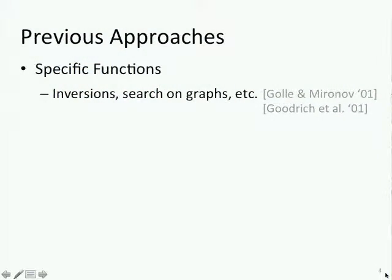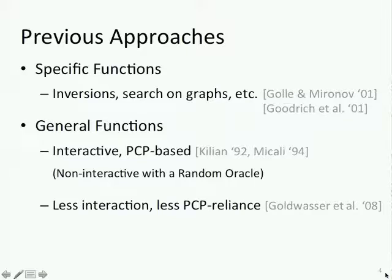There's been some previous work in this area, falling into two main categories. The first is verifying specific functions—for example, early 2000s work on verifying inversion of a one-way function, where you put in answers you know and ask for inversions on the one you don't. Anything in NP is presumably easier to check than to do yourself. But many interesting functions don't lend themselves to this. The second category involves general functions, largely from the PCP family, where the prover generates a large PCP proof, commits to it via a random oracle, and selectively reveals bits so the outsourcing party can verify the proof exists and is correct.